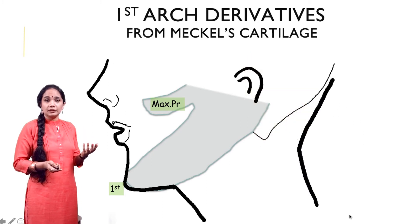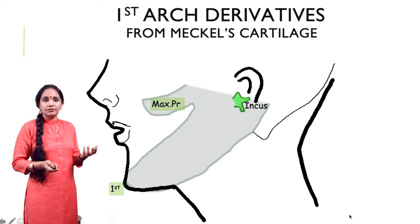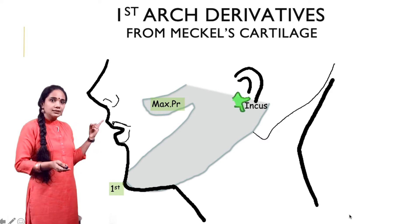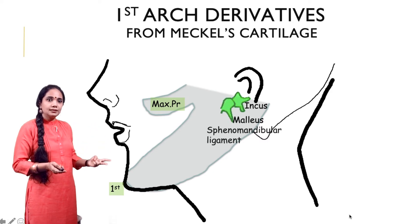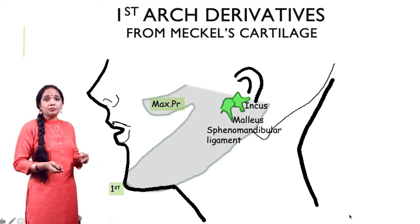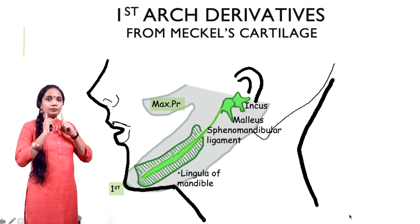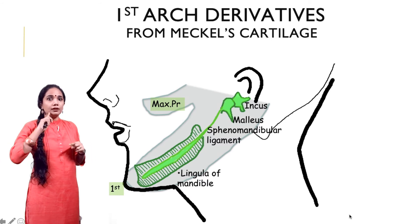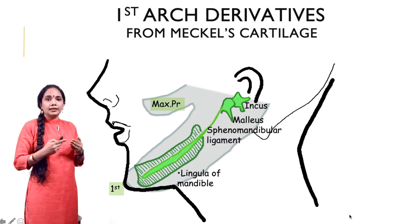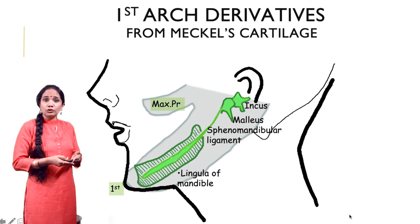From the first arch mandibular cartilage, which is Meckel's cartilage, we have the incus, the malleus, the sphenomandibular ligament from the perichondrium of Meckel's cartilage, and finally the primordium of the mandible. Two primordia of the mandible from either side join together to form the complete mandibular arch in the adult, with intramembranous ossification occurring in the primordia of the mandible giving rise to the adult mandible.